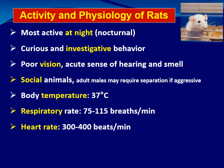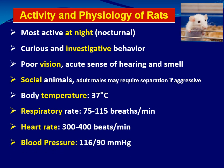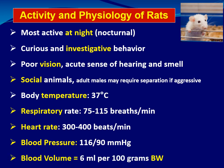Heart rate is much higher than in humans, from 300 to 400 beats per minute. Blood pressure is near that of humans: systolic is 116 and diastolic is 90. Blood volume is about 6 ml per 100 grams body weight, which corresponds to 6 to 7 percent of body weight.